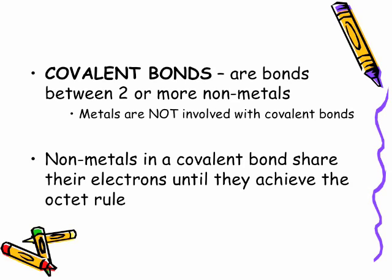So we're looking at now the right of the aluminum staircase. Metals are not involved at all with a covalent bond. Non-metals in a covalent bond share their electrons until they achieve that stable octet, or they pretty much achieve the octet rule.